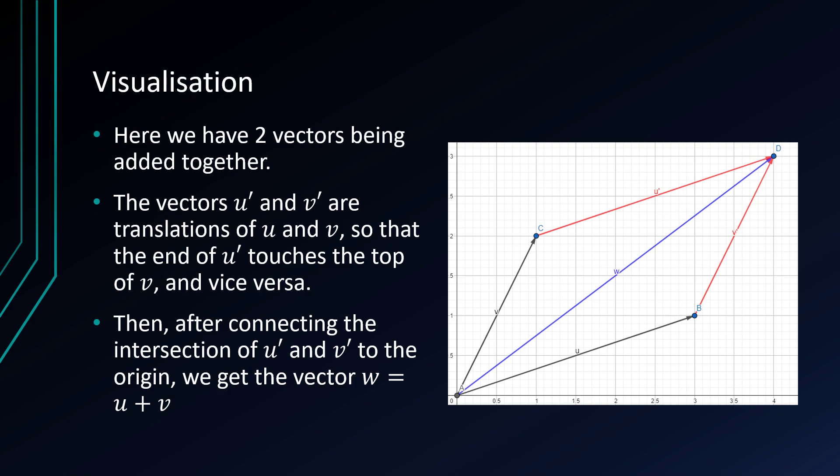What we can do is translate the vectors on top of one another. So here we have the vector u and the vector u prime. Prime just means a change in placement. So u prime is just a translation of u. And similarly, v is a translation of v prime. So we form this little parallelogram shape. It says here that u prime touches the end of v and v prime touches the end of u. And where they intersect, if you then connect the origin to this point here, you actually get the sum of the two vectors.